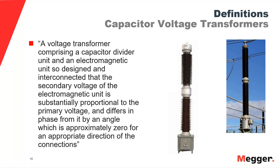The current transformer: the secondary current under normal conditions of use will be substantially proportional to the primary current, with the difference in phase by an angle which is approximately zero for the appropriate direction and the proper connection. Similarly, in the case of the voltage transformer, the secondary voltage in normal conditions of use is substantially proportional to that primary voltage, and that secondary voltage will differ in phase from the primary by an angle that is approximately zero when connections are appropriate.